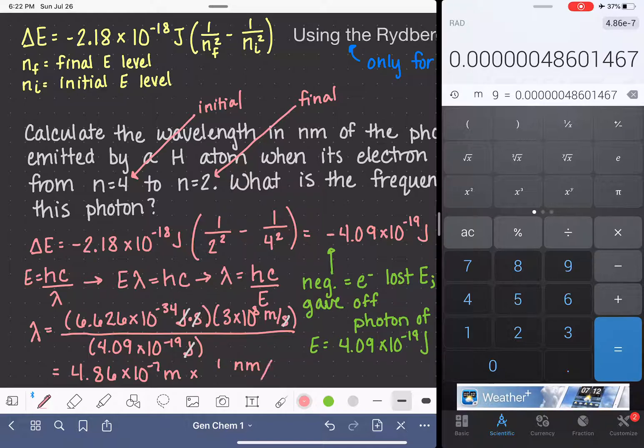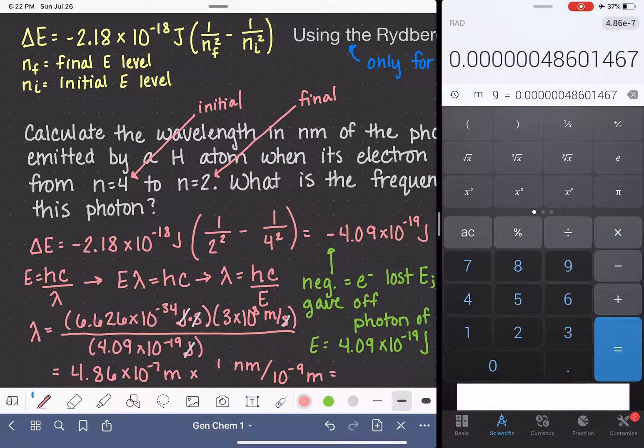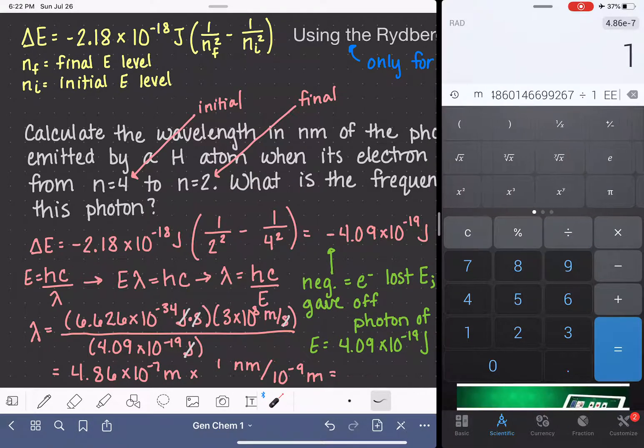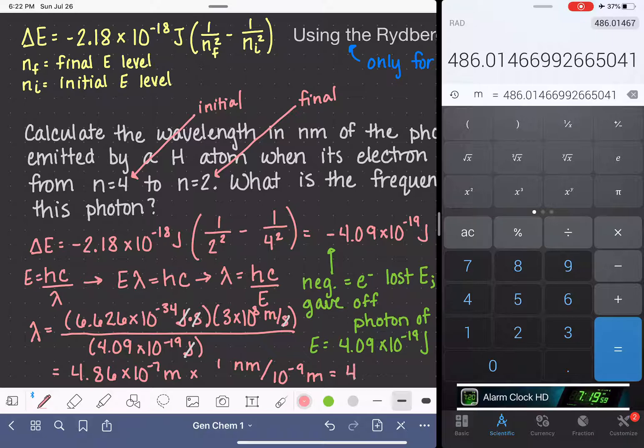Nano is the prefix for 10 to the negative 9. So that means that 1 nanometer is 10 to the negative 9 meters. And so what I'm going to do here next in my last step is to just take this wavelength and divide by 10 to the minus 9. And that gives me a wavelength of 486 nanometers.